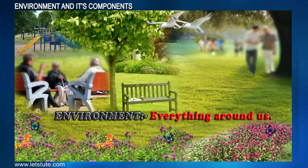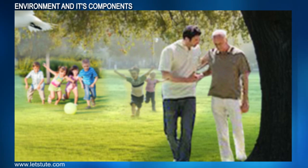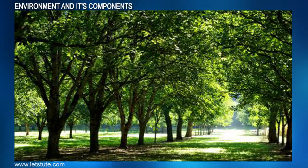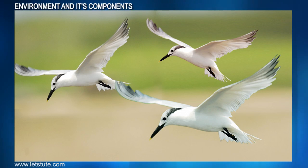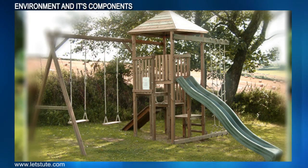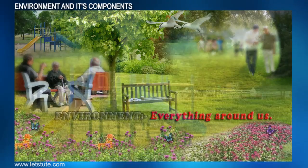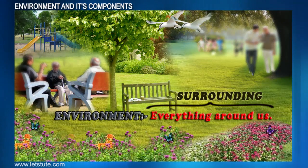Now let us list down a few things that we see here in this park: people sitting or walking around, children playing, the lush green grasses, plants, trees, the tiny insects, birds, the benches, swings, playground, slides, etc. These are a few objects placed near or around us, and they are all part of our surroundings.